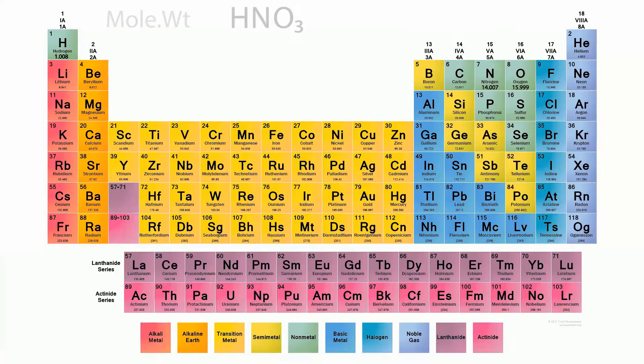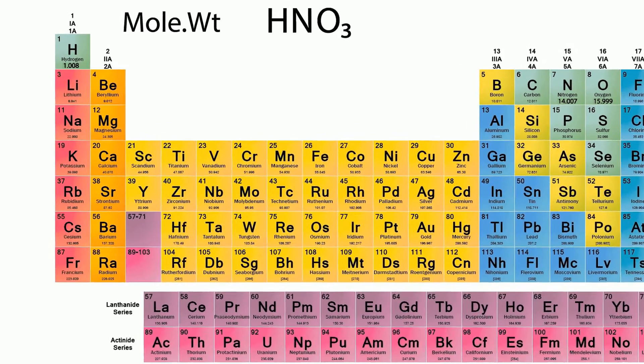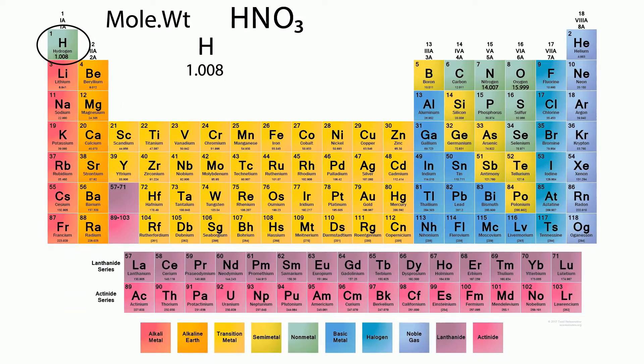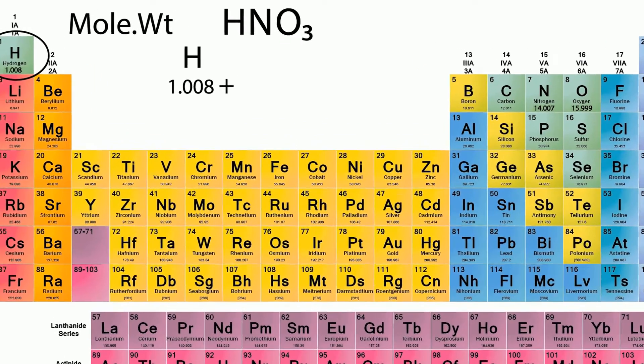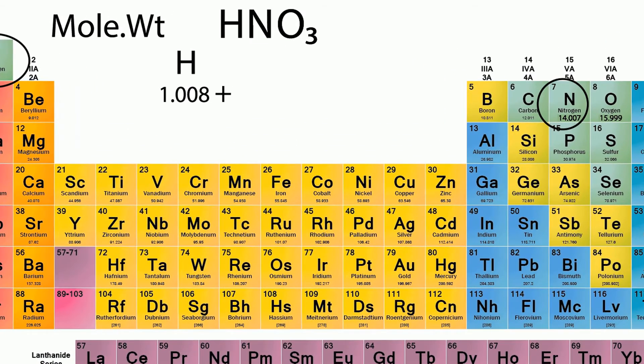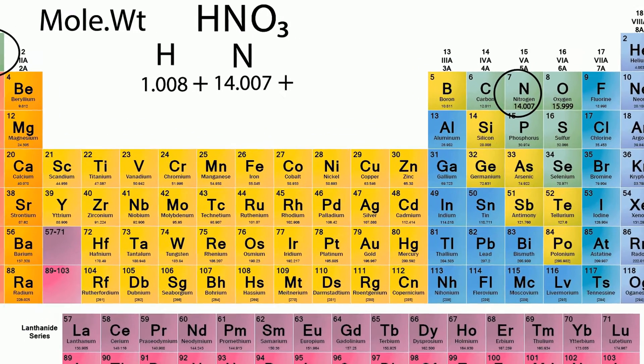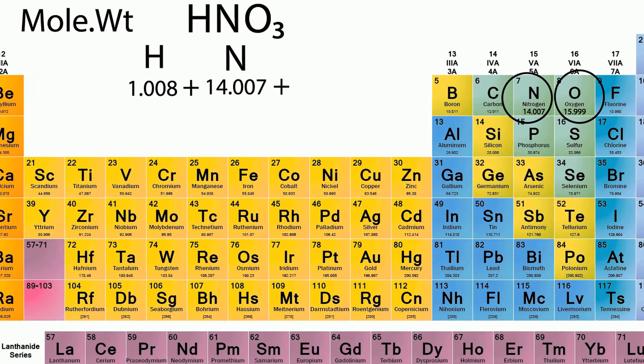We have the molecular formula of hydrogen as 1.008, plus nitrogen which is 14.007, plus three oxygen molecules, so 15.999 multiplied by 3.